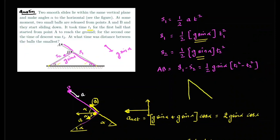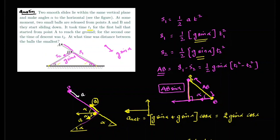Let's look at the problem again. In A's frame, particle B moves along the direction of a_net — that straight line. The shortest distance between stationary point A and that line is the perpendicular, which equals AB·sin(alpha). But the question asks for the time at which the distance is smallest, so the relevant distance along the line is AB·cos(alpha).